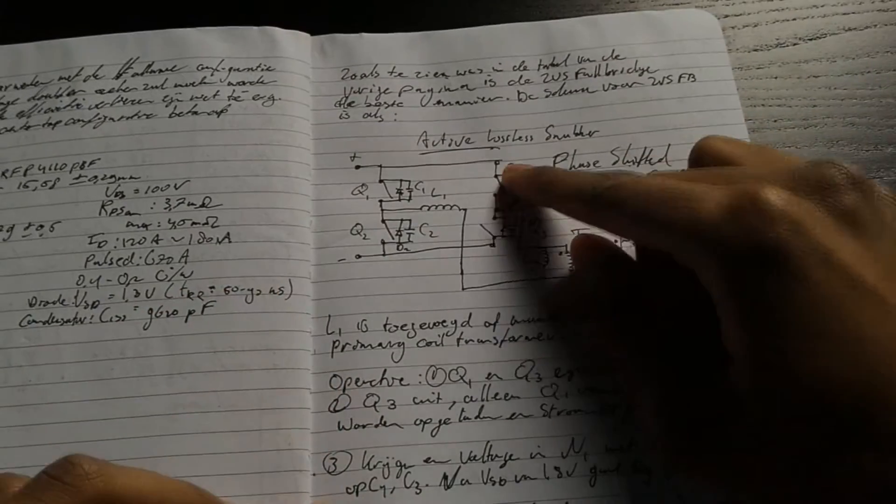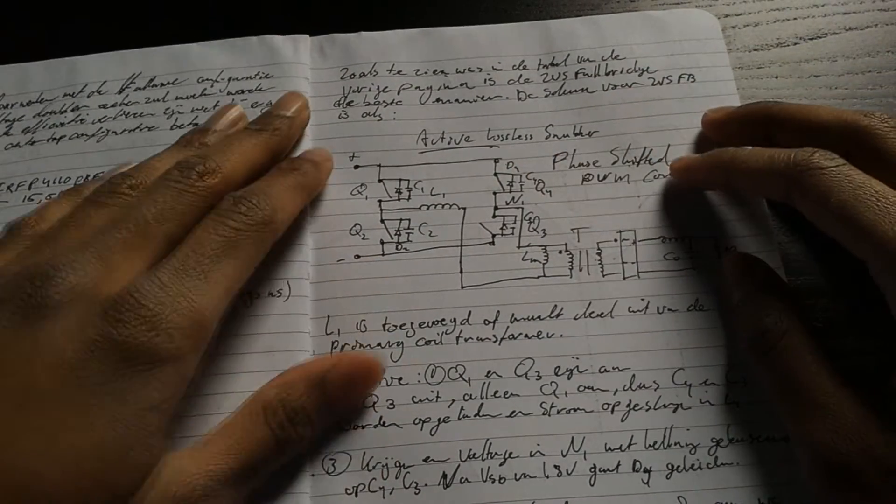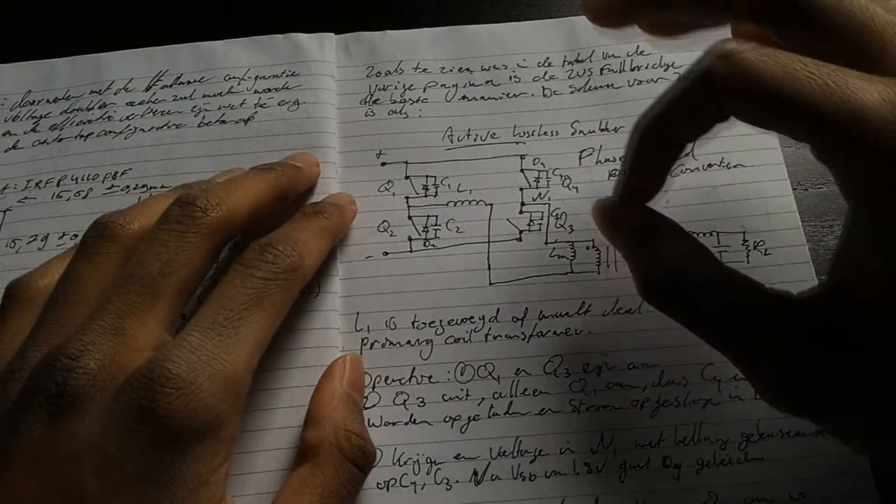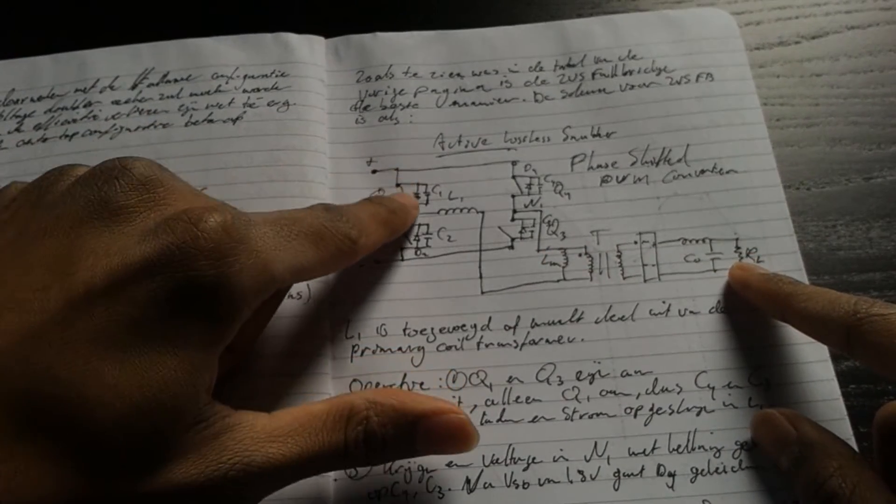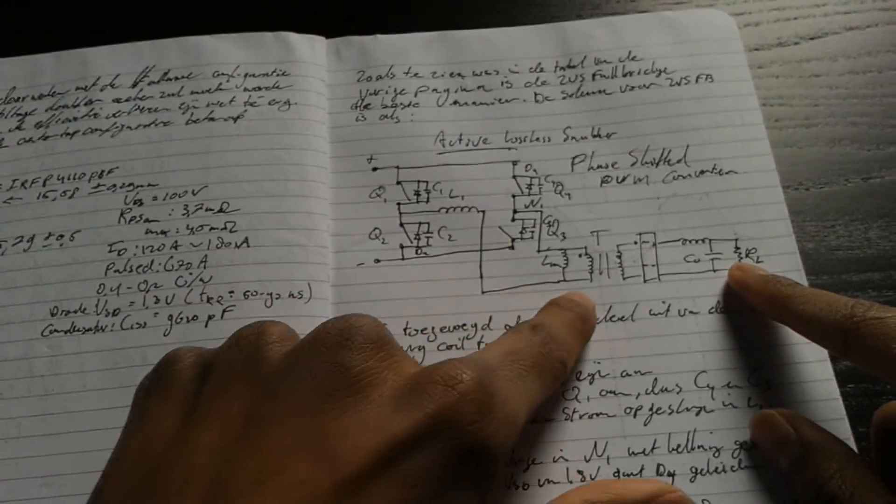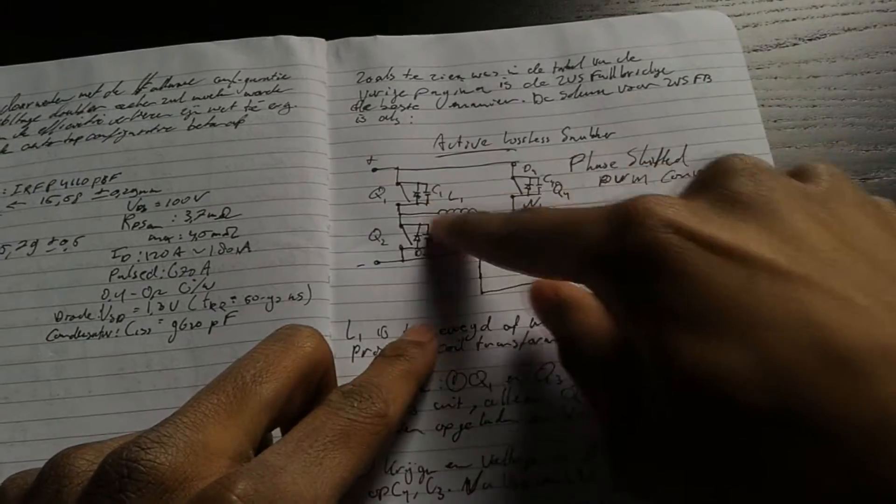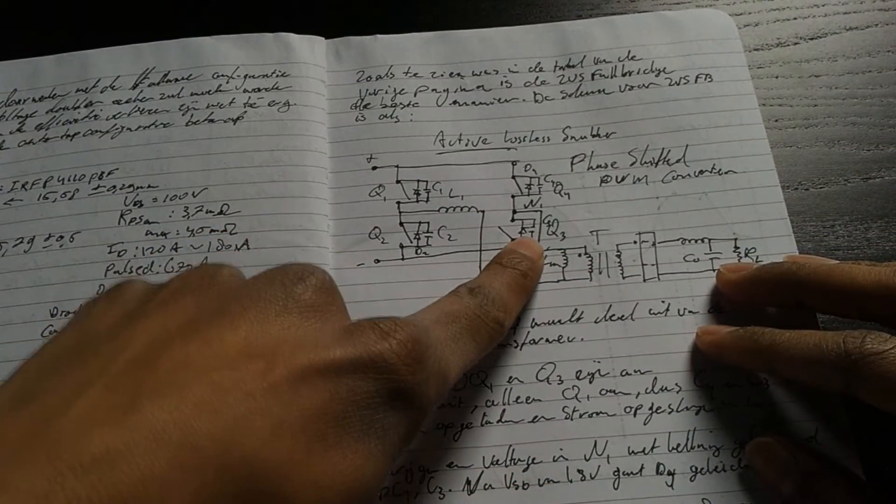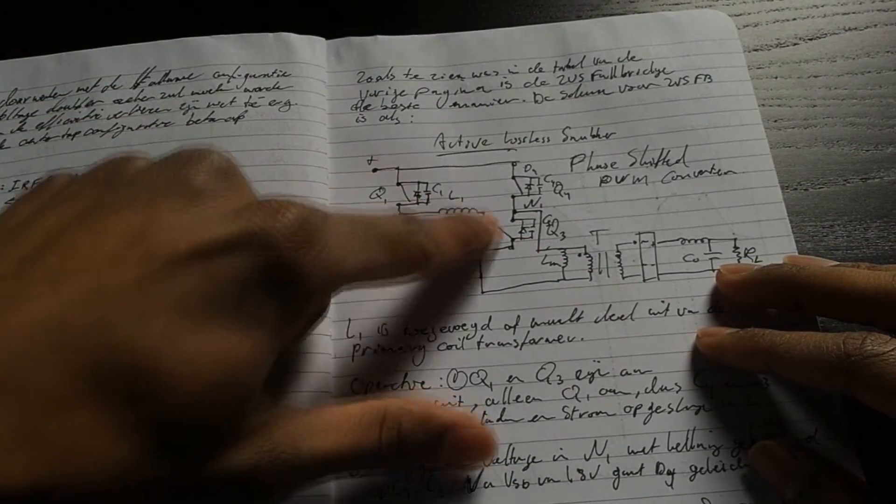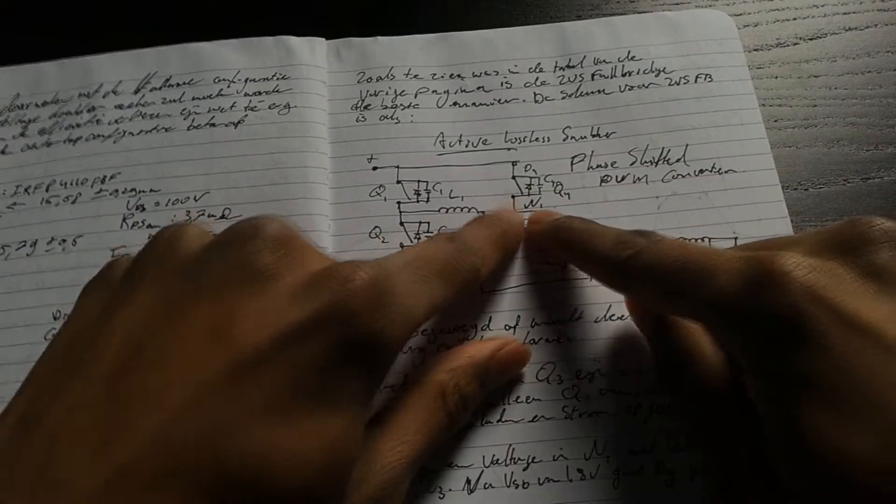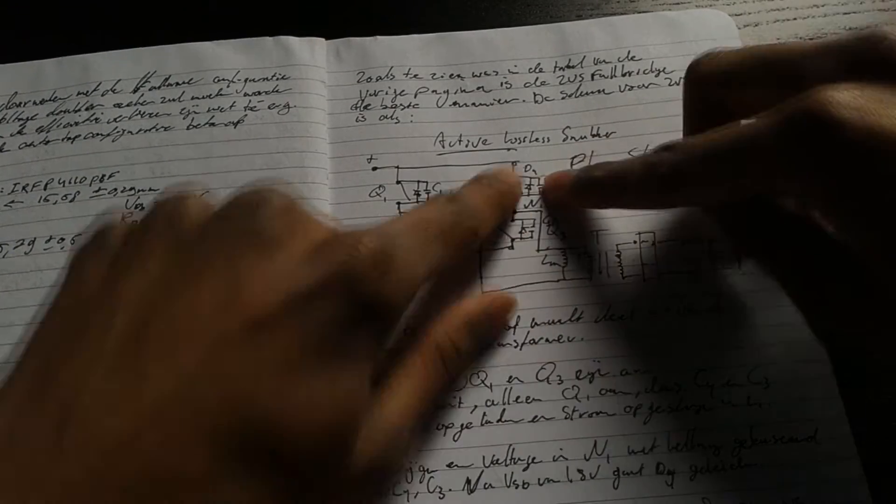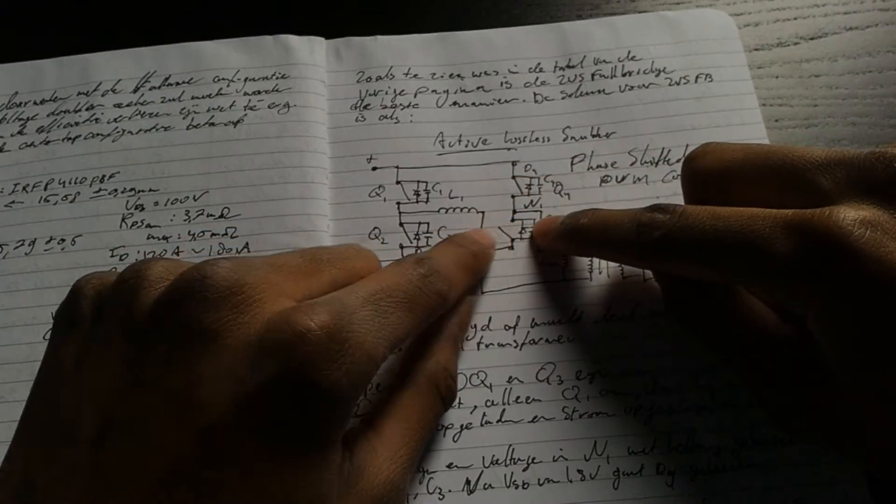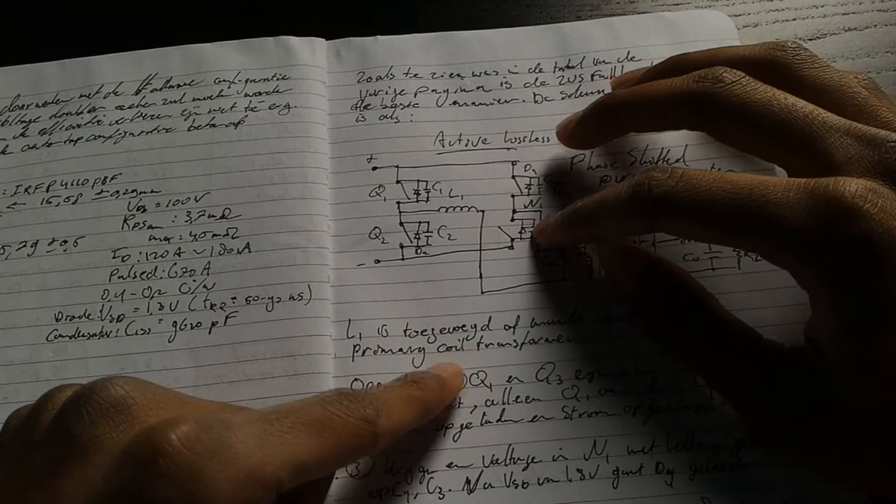We are going to take a look at active lossless snubbing. What happens first is phase 1, which is Q1 and Q3 are turned on. Therefore, we get the current flow through this resonant inductor to Q3 and back to ground. What happens then is that there is energy stored in this inductor, and Q3 is turned off. The current here is stuck in this point, so it starts to charge these capacitors, which are output capacitors of the MOSFETs. You can find these capacitors on the datasheet of the MOSFETs.